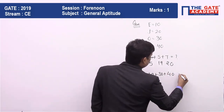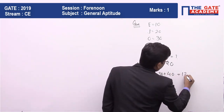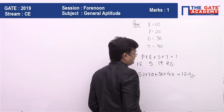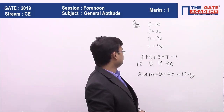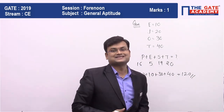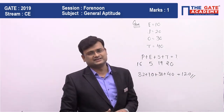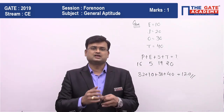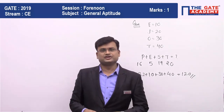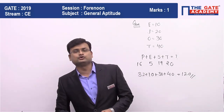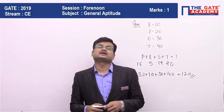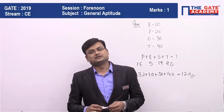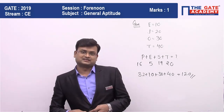If you add all these numbers — 32 plus 10 plus 38 plus 40 — you will get the answer as 120. This is a very simple question. I hope this video was useful for you. Do not forget to like and share the videos with your friends. Thank you.